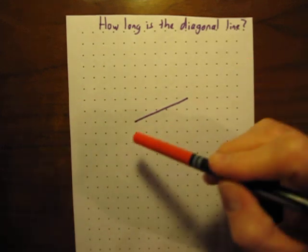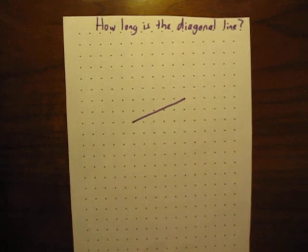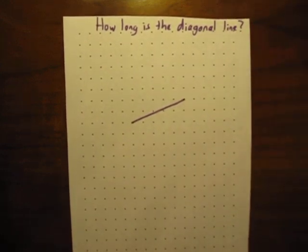So in this problem here, I've got a diagonal line drawn, and I wrote at the top, how long is this diagonal line? You could get out your ruler and you could try to estimate that by measuring it with a ruler, but that's the wimpy way. Let's use a more mathematical way to try to solve for this diagonal length.